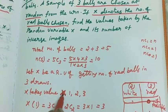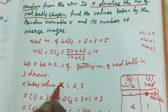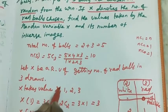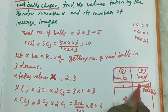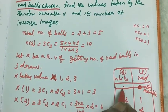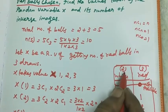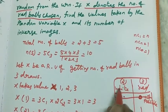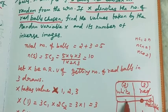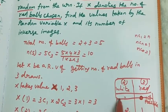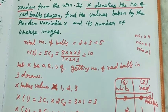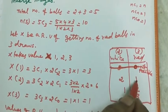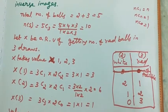Since x=0 red balls is not possible — we'd need 3 white balls but only 2 are available — the option is 0. So x takes the values 1, 2, and 3. Thank you.